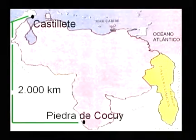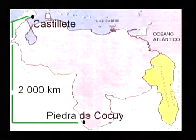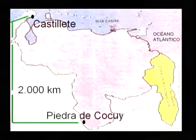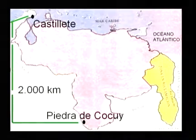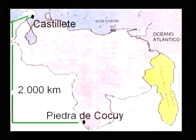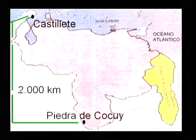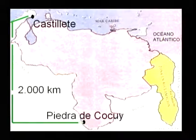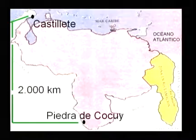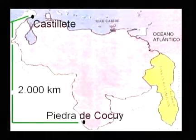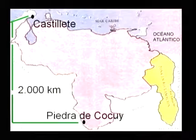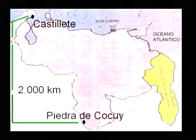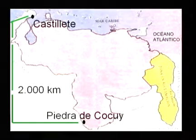Hacia el oeste limitamos con la República de Colombia, desde Piedra del Cocuy hasta la península de Castillete. Eso representa un perímetro o longitud de 2.000 kilómetros. Como podrás observar, cuando trabajamos perímetro estamos prácticamente delimitando nuestras fronteras. El perímetro no es más que el contorno de todo nuestro territorio. Recuerda que tenemos fachadas marítimas, pero también límites terrestres con Colombia, Brasil y Guyana. Verifica las anotaciones que has realizado hasta ahora.